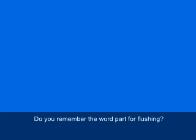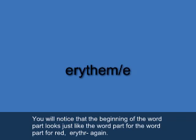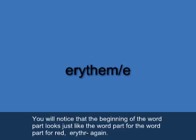Finally, we have a word part that refers to flushing. This one's a little trickier — it's ERYTHEM/E — E-R-Y-T-H-E-M slash E. Unusual, it requires the slash E rather than slash O as a combining vowel. You'll notice the beginning looks just like the word part for red, ERYTHR/O, but this is ERYTHEM/E, and that refers to flushing — when your skin would turn red.